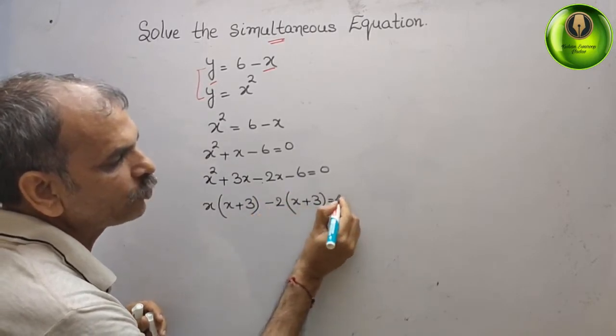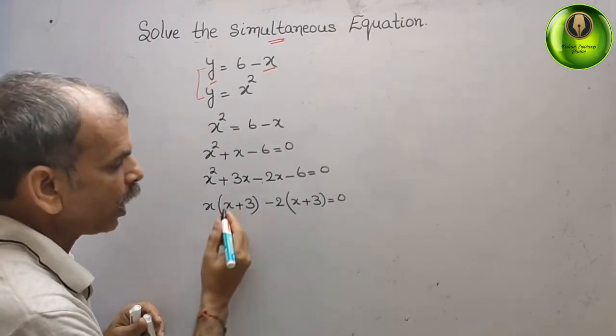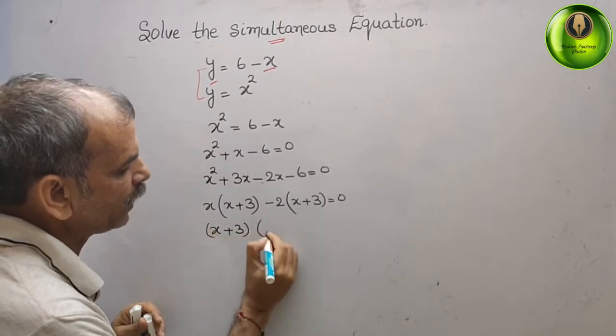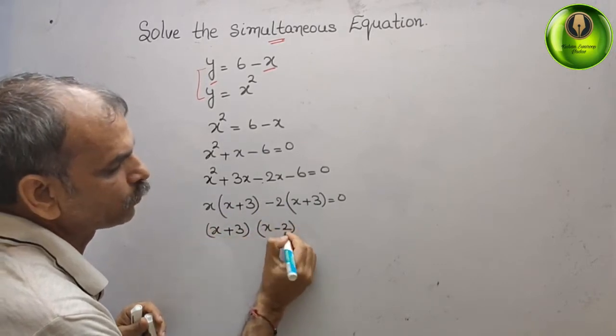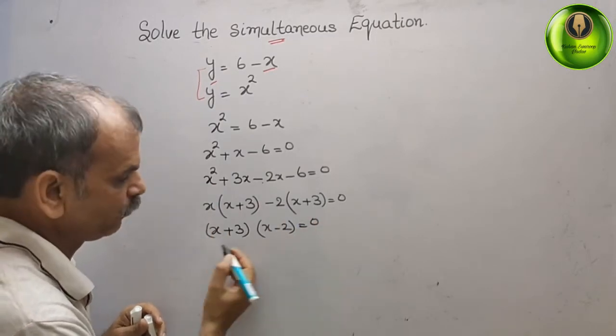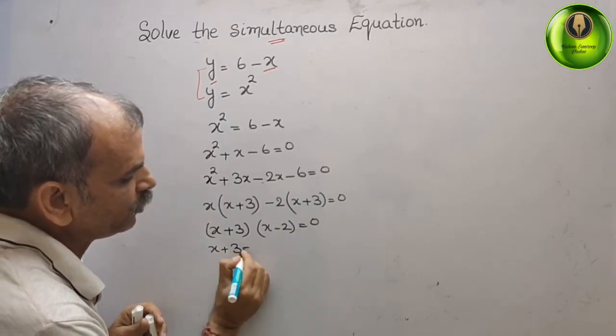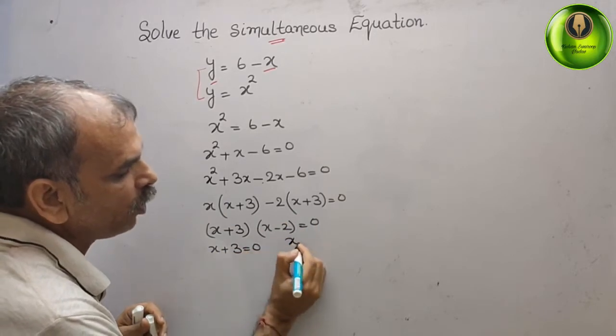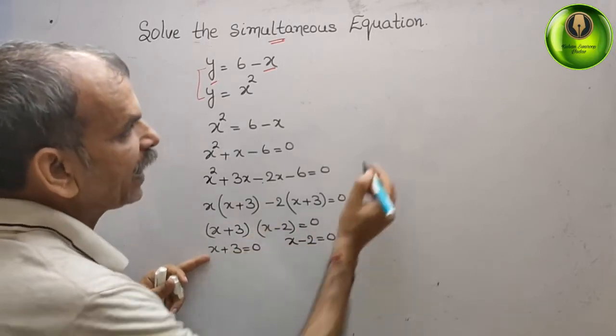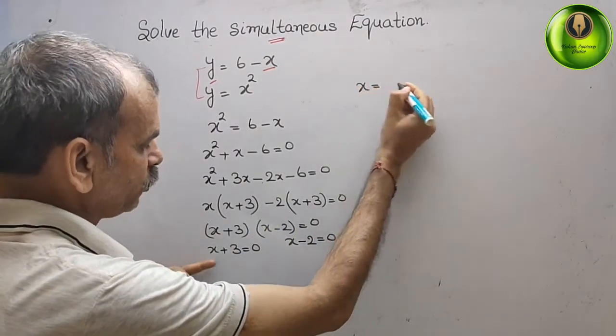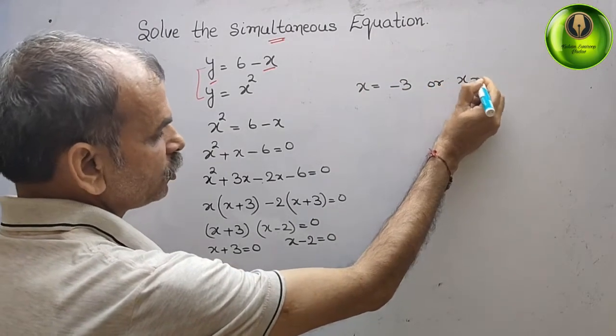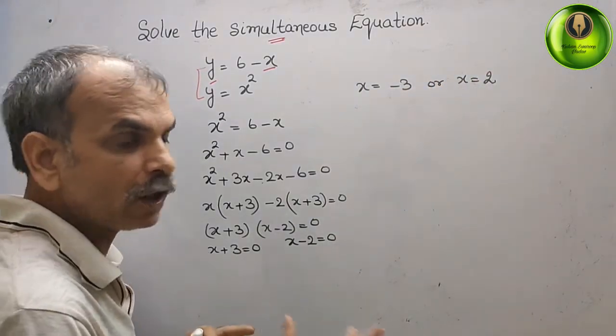Now what are the factors? x + 3 and x - 2 that gives you 0. What is the value for x? x + 3 = 0 or x - 2 = 0. That means x = -3 or x = 2. We got the value for x.